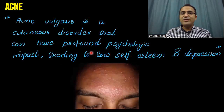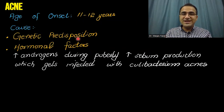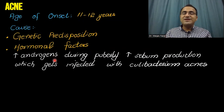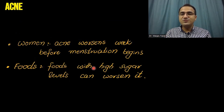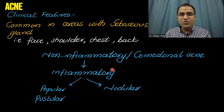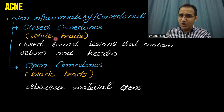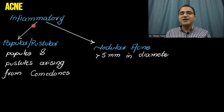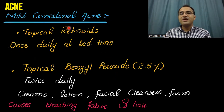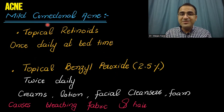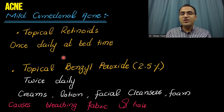In summary, we talked about what is acne, the age of onset, the risk factors, foods with higher glycemic load, clinical features — closed comedones, whiteheads, blackheads, inflammatory acne, nodular, pustular — and the treatment of mild comedonal acne.